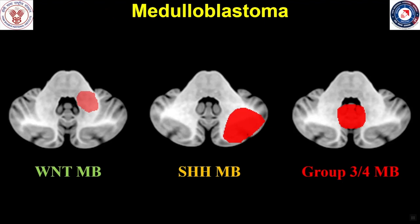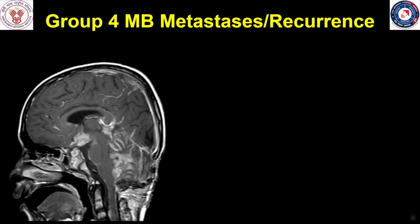Medulloblastomas are the most common malignant neoplasms in the posterior fossa in the pediatric age group. Based on location: the WNT subgroup is classically located along the lateral recess of the fourth ventricle or in the CP angle; the SHH subgroup are surfacing neoplasms involving the lateral aspect of the cerebellar hemispheres, often abutting the tentorium; and Group 3 and Group 4 medulloblastomas are midline neoplasms involving the vermis and/or the fourth ventricle.